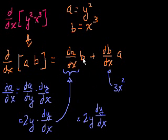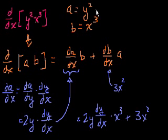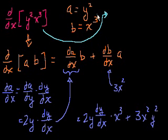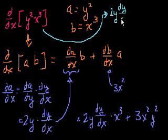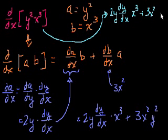So implicit differentiation is really just applying the chain rule. The shortcut, without going through all of this setup, is to just use the product rule directly: take the derivative of the first expression, y squared, which is its derivative with respect to y times dy/dx — because we're differentiating with respect to x — times the second expression x to the third; plus the derivative of the second expression with respect to x, 3x squared, times the first expression y squared.